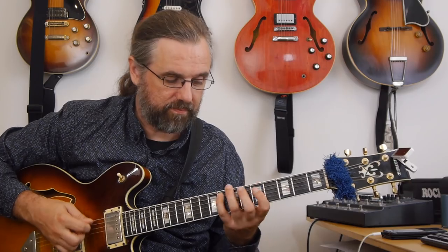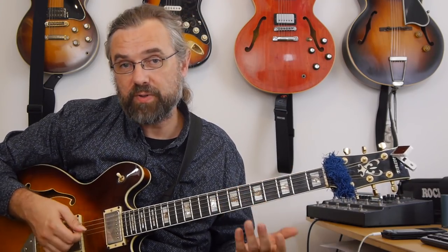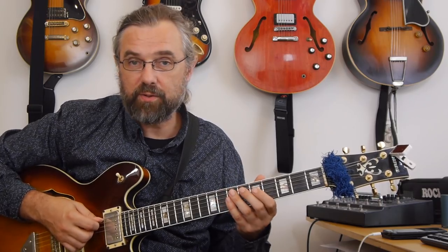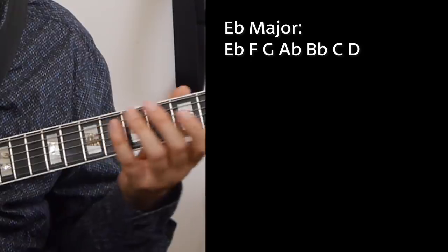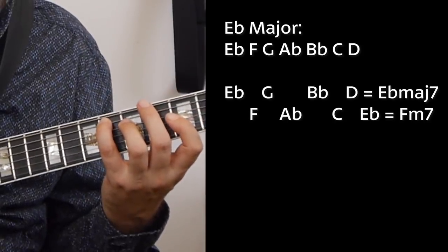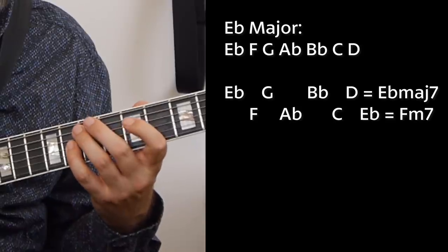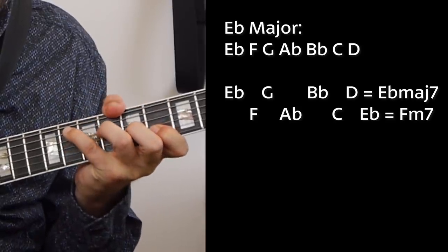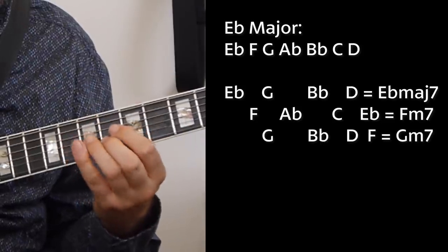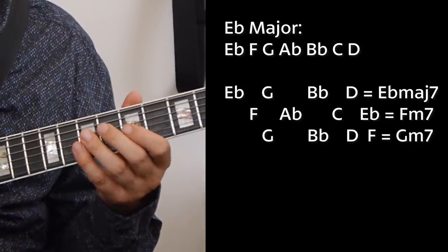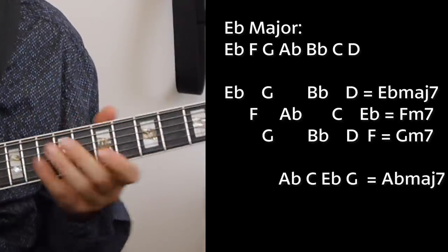If we have the E-flat major scale, the way you're building chords within a scale is just to stack thirds. So E-flat, G, B-flat, D is the E-flat major seven chord. Then F, A-flat, C, E-flat is F minor seven. Then we get G minor seven: G, B-flat, D, F. Then A-flat major seven: A-flat, C, E-flat, G. In that way you're just going through it and building the chords.